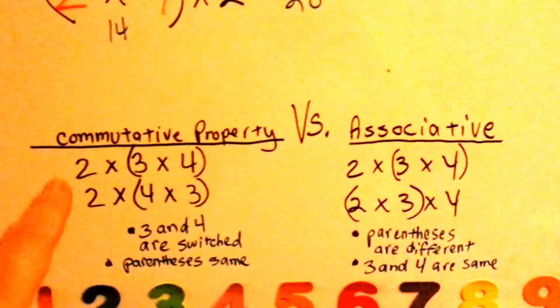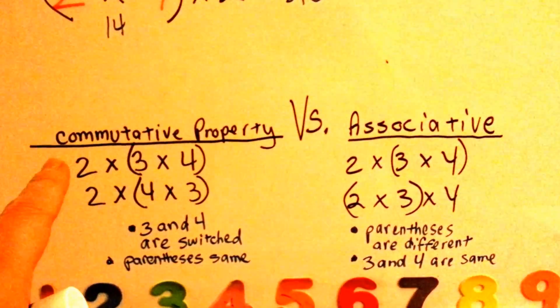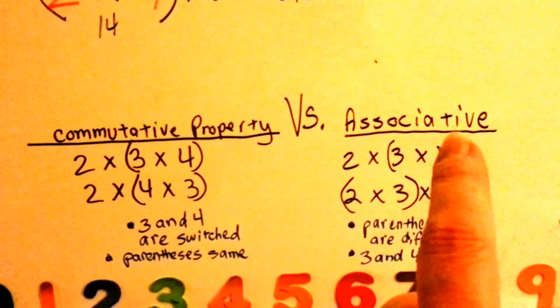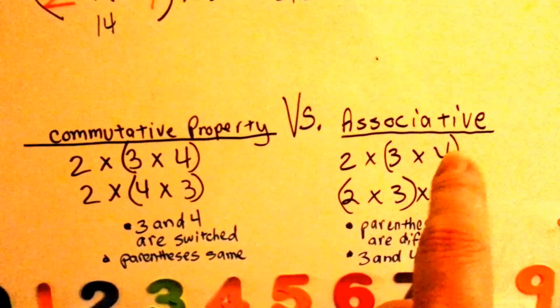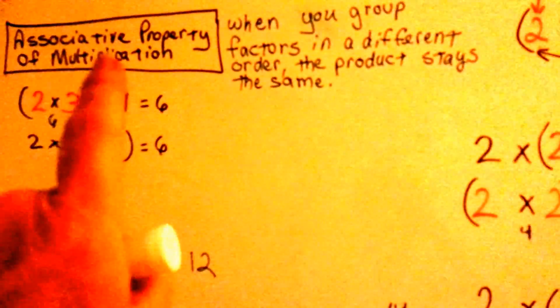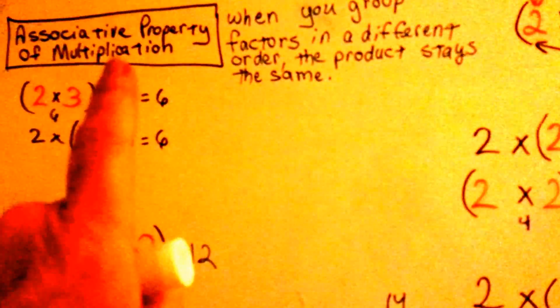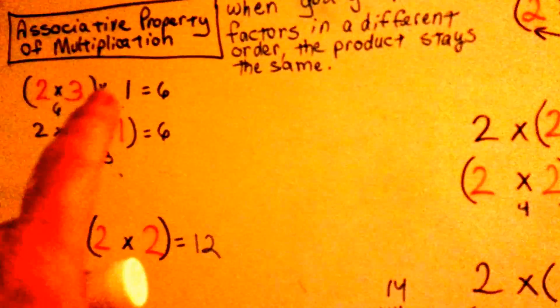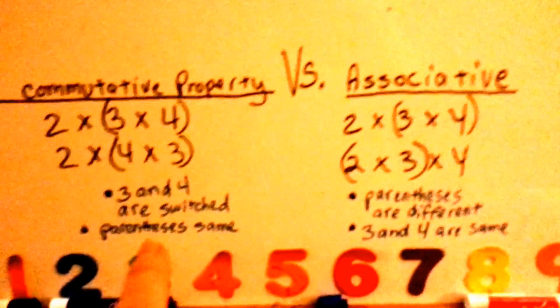So, remember we had commutative property of multiplication, and now we have associative property of multiplication. Now, I want you to notice we're saying of multiplication because there is associative and commutative property of addition, that would have plus signs here instead of the times table sign. Okay, so can you see the difference?